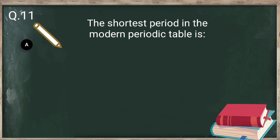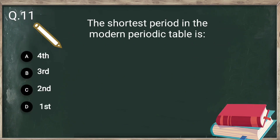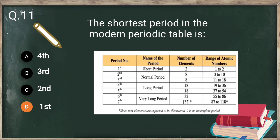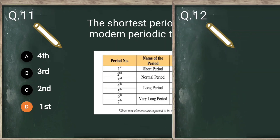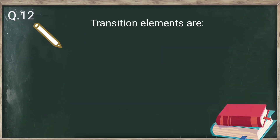Question number 11: the shortest period in the modern periodic table is which one? The 1st period is known as the shortest period. The 1st period contains only 2 elements, that is why it is known as the short period.